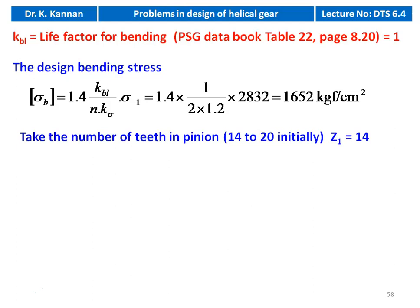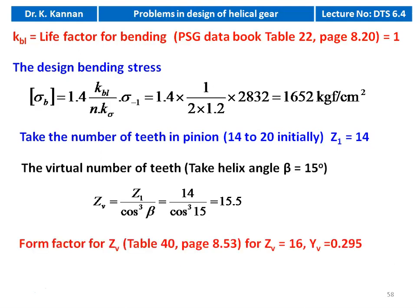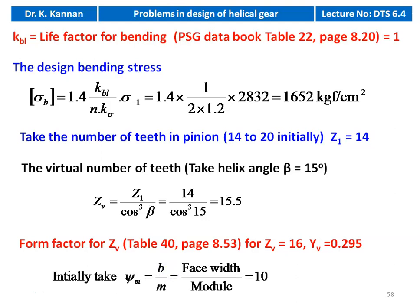Number of teeth on pinion initially taken as 14 (minimum 14 to 20). Virtual number of teeth for helix angle beta = 15 degrees: ZV = Z1 / cos³(beta) = 14 / cos³(15°) = 15.5, rounded to 16. Form factor YV = 0.295 for ZV = 16. We take psi_m = B/m = 10 for calculation.